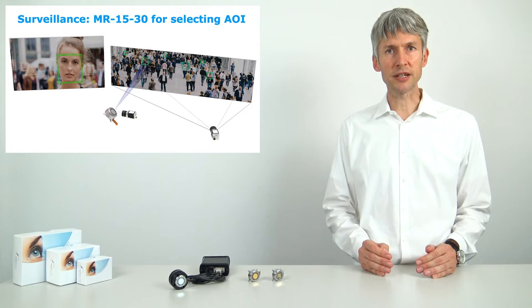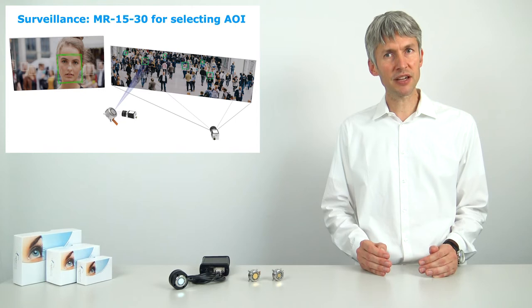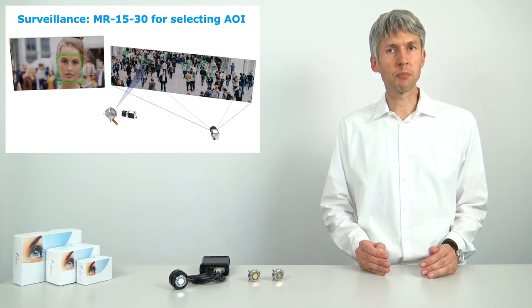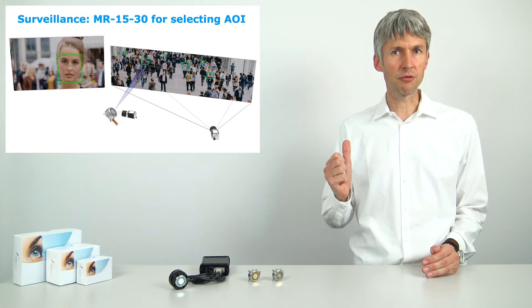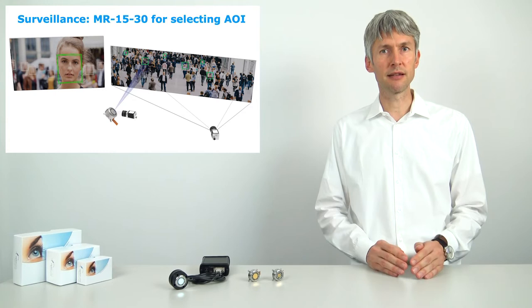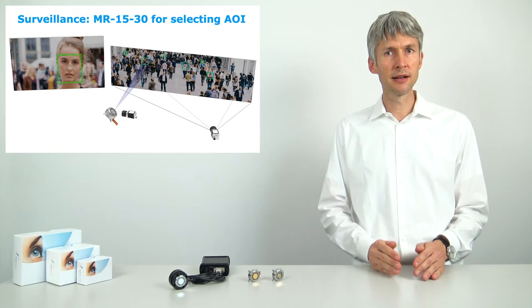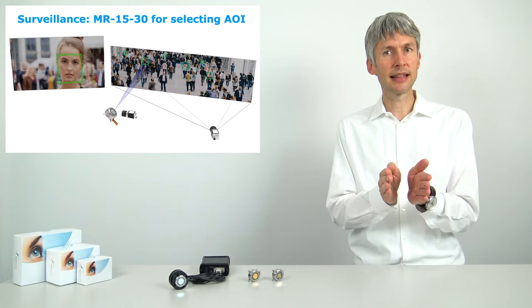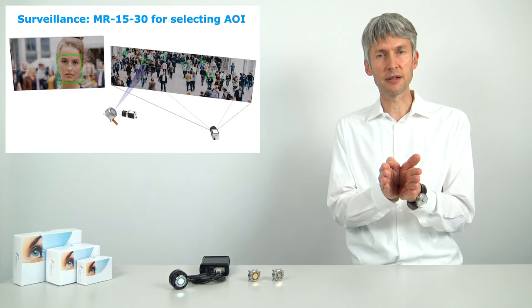Surveillance applications, for example Homeland Security in airports and other busy public spaces, have in common that the camera is typically far away from the object. A possible configuration is depicted here. The stand-alone camera on the right is equipped with a wide-angle objective to capture the overall scene. The camera on the left is equipped with a narrow-angle tele-lens and looks on the mirror and allows to zoom in and select a small area of interest of about 5 degree out of 100 degree optical field of view.